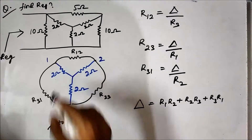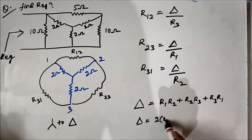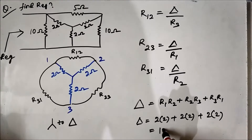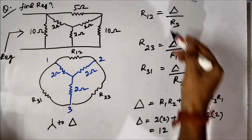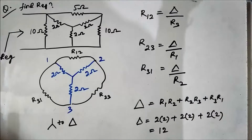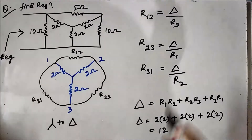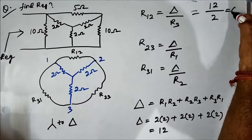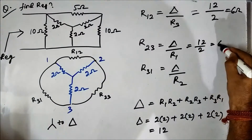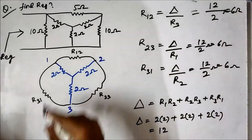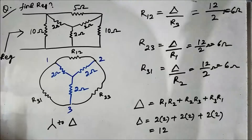The value of delta is R1·R2 + R2·R3 + R3·R1. For this given network, delta equals 2×2 + 2×2 + 2×2, which equals 4 + 4 + 4 = 12. The values of R12, R23, and R31 will all be the same because the three resistors in the star connection are equal. So R12 = 12 divided by 2 = 6 ohm, R23 = 12 divided by 2 = 6 ohm, and R31 = 12 divided by 2 = 6 ohm. All three delta resistors are 6 ohms.